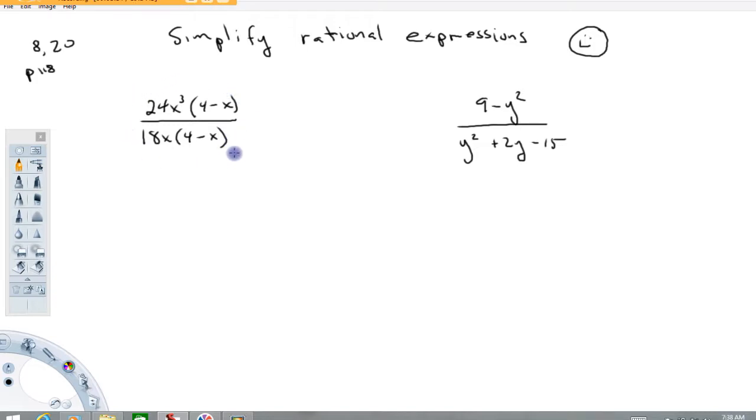So this expression here is a valid expression unless x were 0 or x were 4. So what I'm going to do is put here x cannot equal zero, x cannot equal 4, because otherwise this expression would have divisions by zeros.